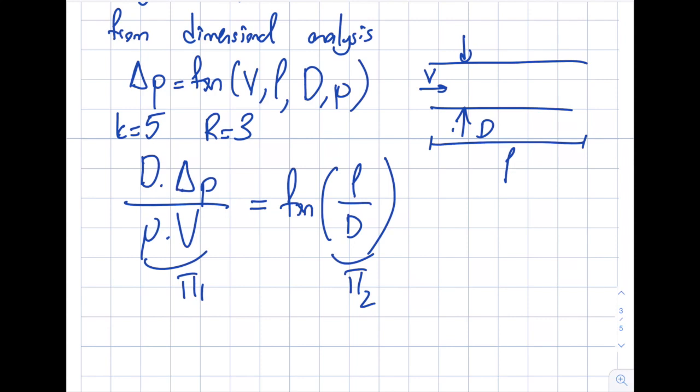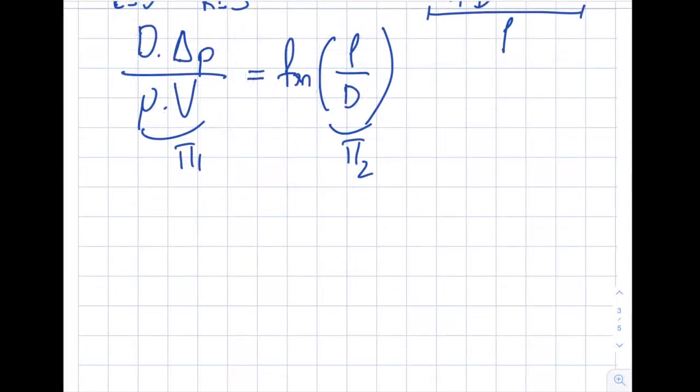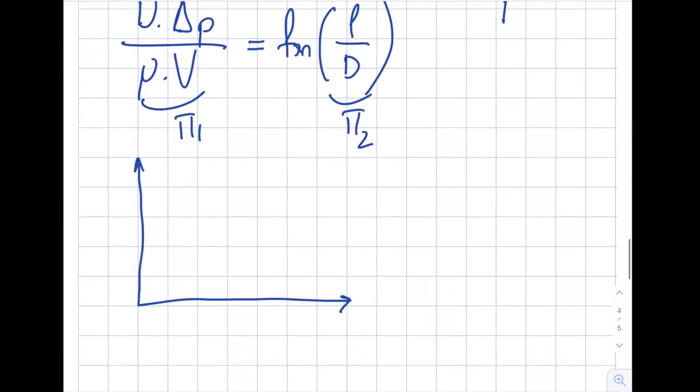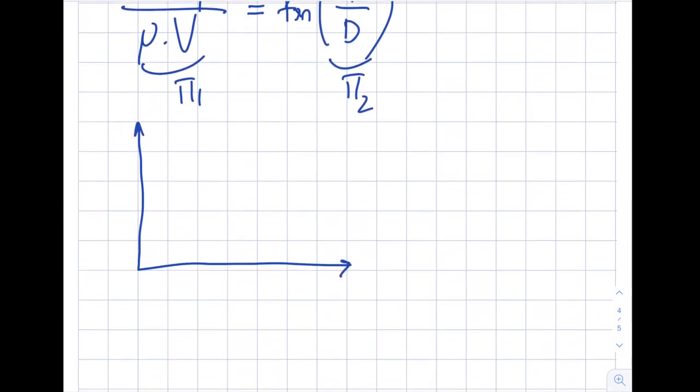Obviously, I picked this particular set of repeating variables. I picked d, viscosity and velocity as my repeating variables. And this is what I get. The next step is to do experiments. And in the experiments, I need to obtain this one. The pi 1, which is d delta p viscosity times velocity, is a function of l over d.